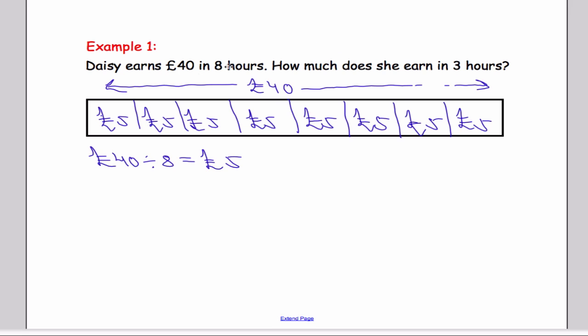How much does she earn in 3 hours? Well, we've got 1, 2, 3 lots of 5, so 3 times £5 gives us £15. So Daisy earns £15 in 3 hours.